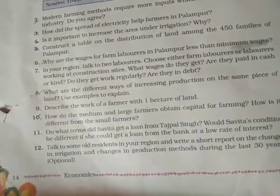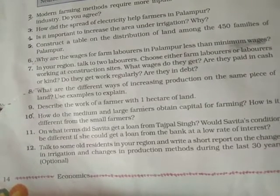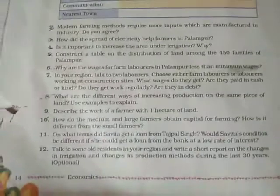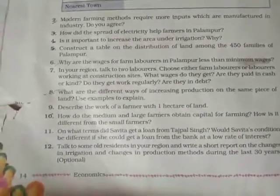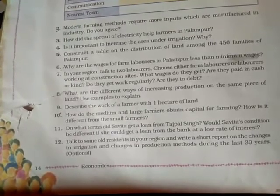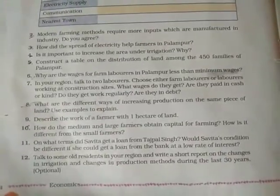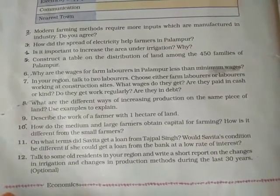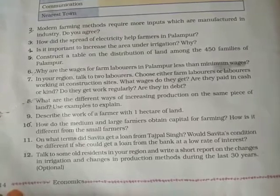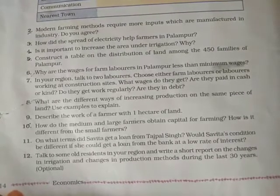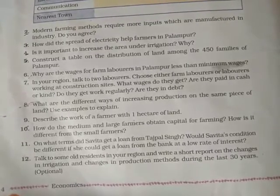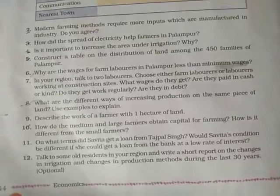Question eleven: On what terms did Savita get a loan from Tejpal Singh? She took a loan of rupees 3,000 at a high interest rate of 24 percent, to be repaid in four months. She also had to work on Tejpal's field as a farm laborer during harvesting season at only rupees 35 per day. Had she borrowed from a bank at a low rate of interest, she could have devoted more time to her own field instead of working as a farm laborer for Tejpal Singh.